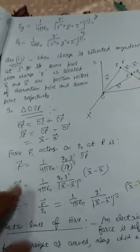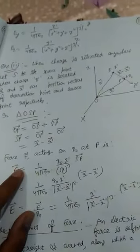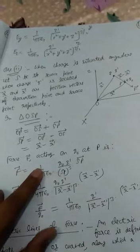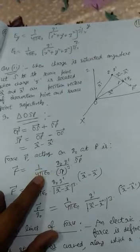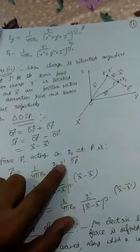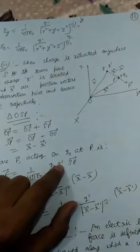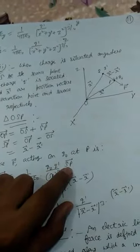And force acting on charge Q0 is 1 upon 4 pi epsilon 0 into Q0 into Q', now we will have SP vector.